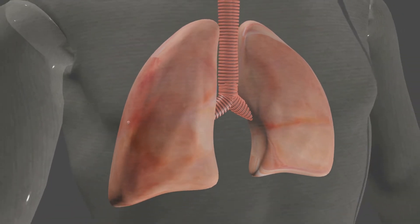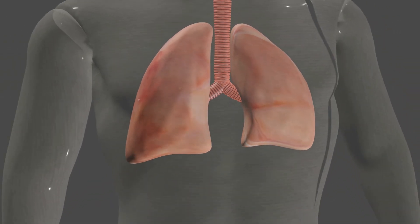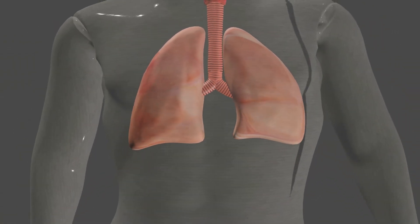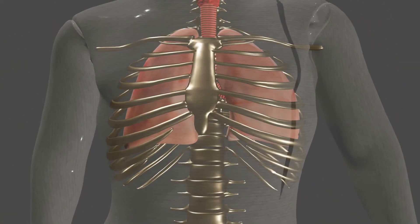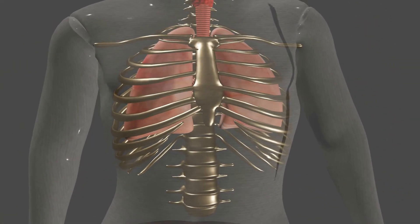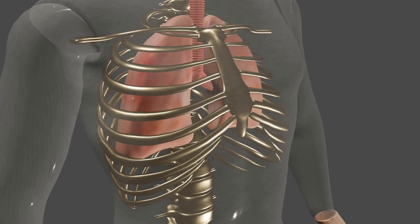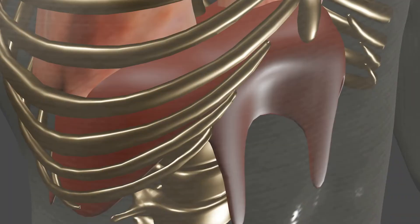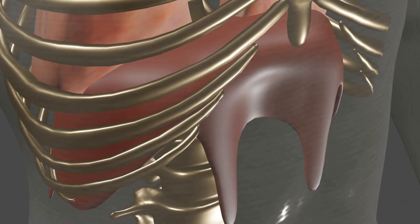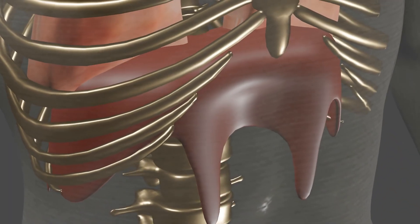Lungs are placed in the chest cavity. The chest cavity is bounded by ribs and muscles on the sides. The floor of the chest cavity is called the diaphragm, which is a sheet of skeletal muscles.